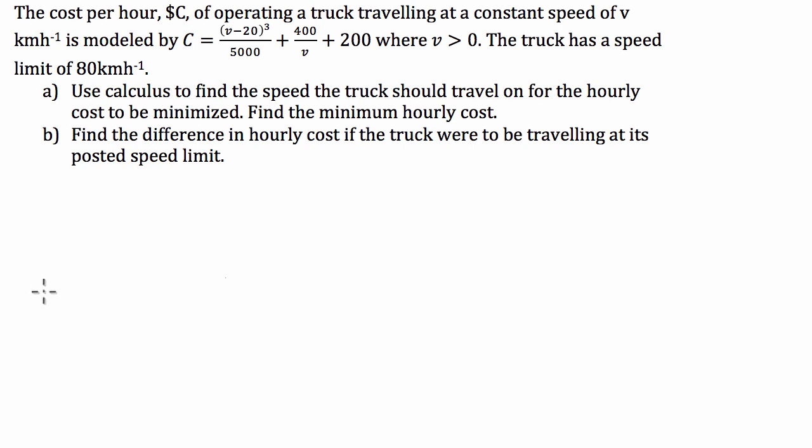G'day guys, we've got an optimization question here today where we've got the cost per hour, C dollars, of operating a truck traveling at a constant speed of V kilometers per hour is modeled by this function here, where V is greater than zero. The truck has a speed limit of 80 kilometers an hour, so a maximum speed of 80 clicks. Use calculus to find the speed the truck should travel on for the hourly cost to be minimized. Find the minimum hourly cost. And we have to find the difference in the hourly cost if the truck were to be traveling at its posted speed limit.